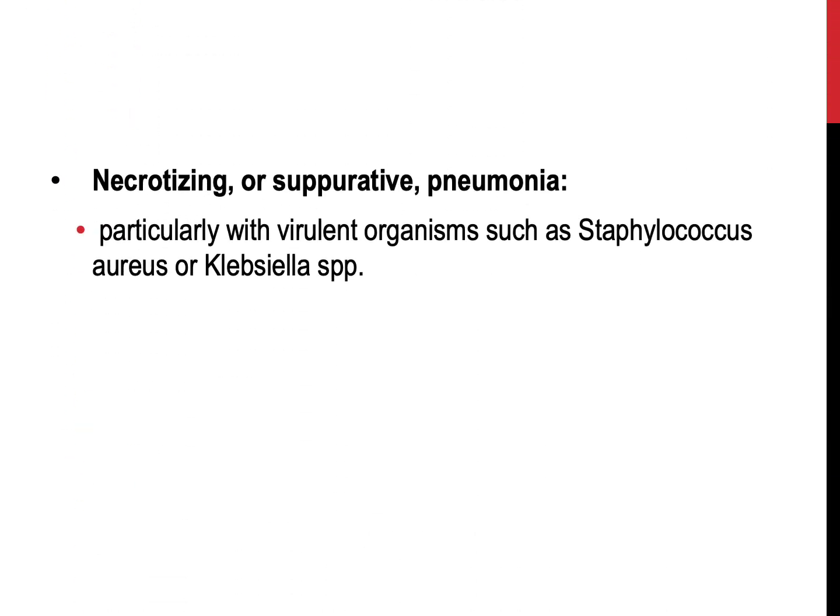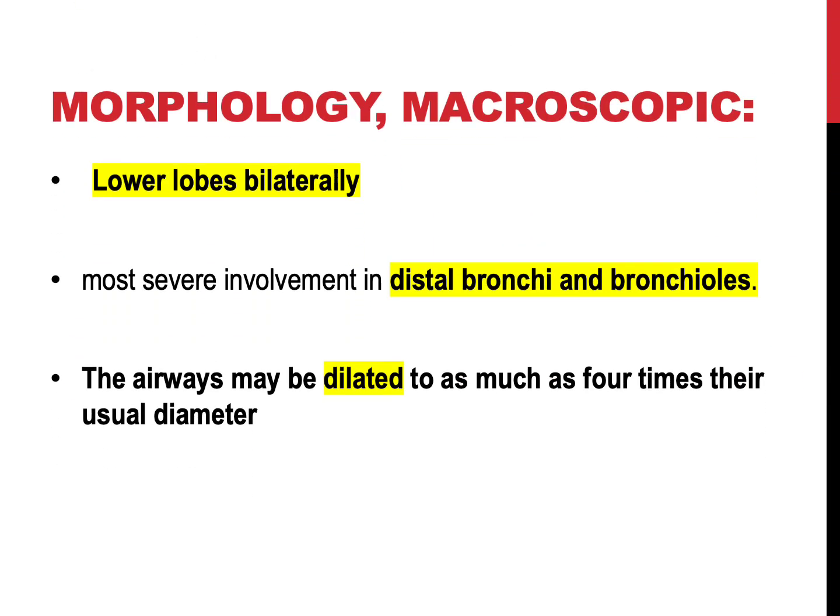Necrotizing or suppurative pneumonia, particularly those caused by virulent organisms such as Staphylococcus aureus or Klebsiella species, is another primary cause. Macroscopically, bronchiectasis usually affects the lower lobes bilaterally, particularly the vertical air passages. The most severe involvement is found in the more distal bronchi and bronchioles, and the airways may be dilated as much as four times their usual diameter.